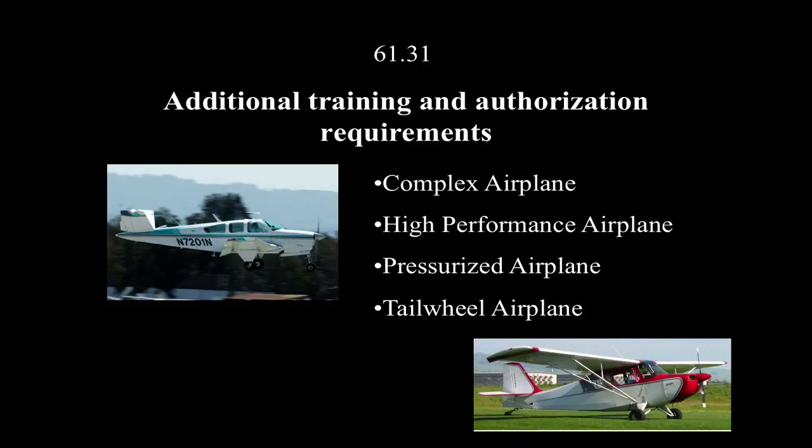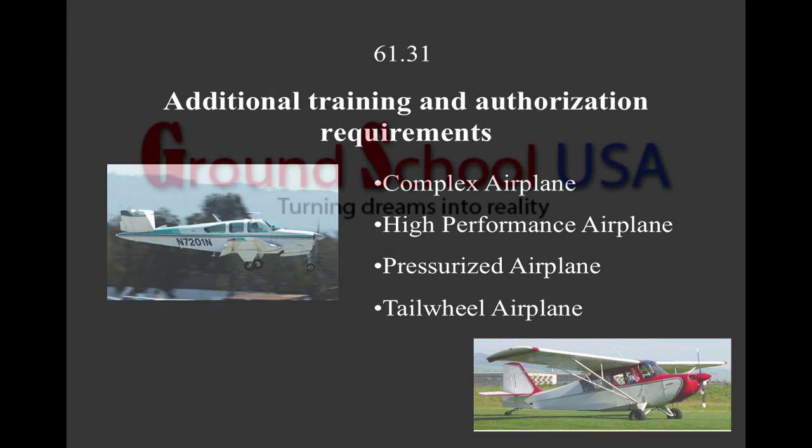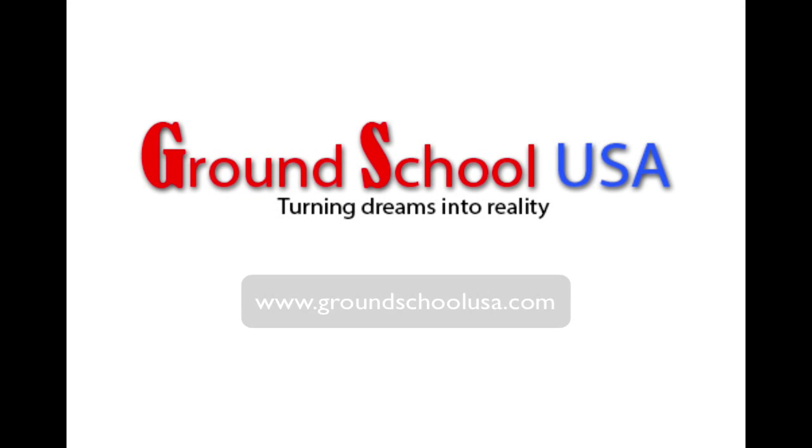The fourth endorsement is for tailwheel aircraft. A tailwheel aircraft has three wheels with one in the back, sitting on its tail — also called conventional gear. Tailwheel aircraft can be squirrely on the ground, especially in crosswinds, so you'll need plenty of good instruction to learn the ropes. Those are the four additional endorsements and training required under 61.31.